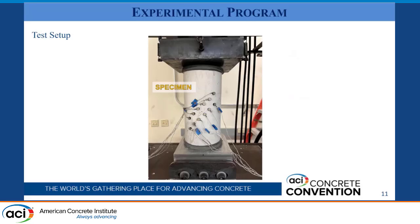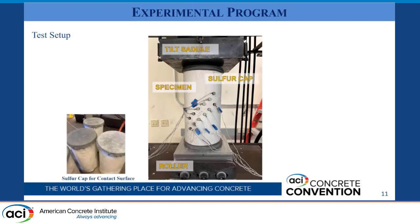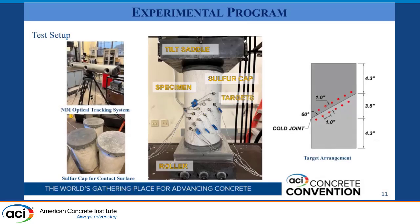We tested these slant shear specimens by applying a uniaxial compression load at a constant displacement rate of 0.05 inches per minute using a 440-kip MTS load frame. Boundary conditions were idealized using a tilt saddle at the top and a roller at the bottom to allow for rotation and lateral displacement. Sulfur caps were applied at the top and bottom to ensure a leveled contact surface. We used an optical tracking system, also known as OptoCheck, to quantify slip at the cold joint, with targets placed along the cold joint interface — six in the substrate and six in the overlay at one-inch increments.